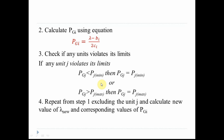Suppose unit J is violating its limit. Violation can be of two types: PGJ can be less than the minimum limit, or it can be greater than the maximum limit. If the scheduled generation goes below the minimum limit, we peg or fix that unit's generation to its minimum value. For example, if a unit has a limit of 50 to 100 MW and the calculated value is 20 MW, we fix the generation to 50 MW.